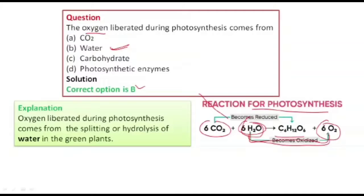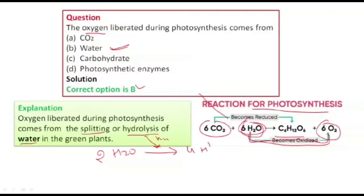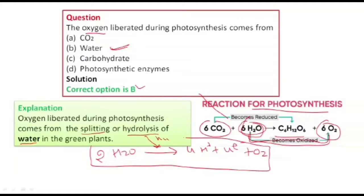Oxygen liberated during photosynthesis comes from the splitting — that is, the hydrolysis — of water. You can see here that two H2O molecules, in the presence of sunlight, release four protons, four electrons, and one oxygen molecule. We will study this reaction in detail in the next class on photosynthesis.